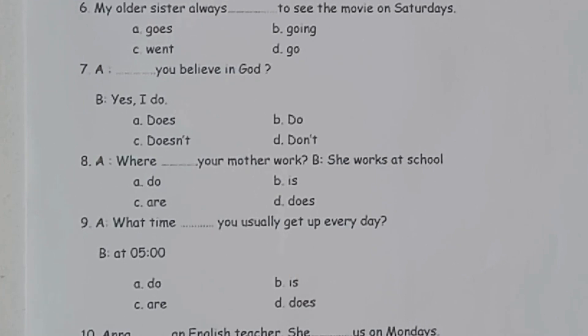Okay, contoh pertanyaannya adalah my older sister always titik-titik to see the movie on Saturdays. Pilihan jawabannya apakah A goes, B going, C went, dan D go.